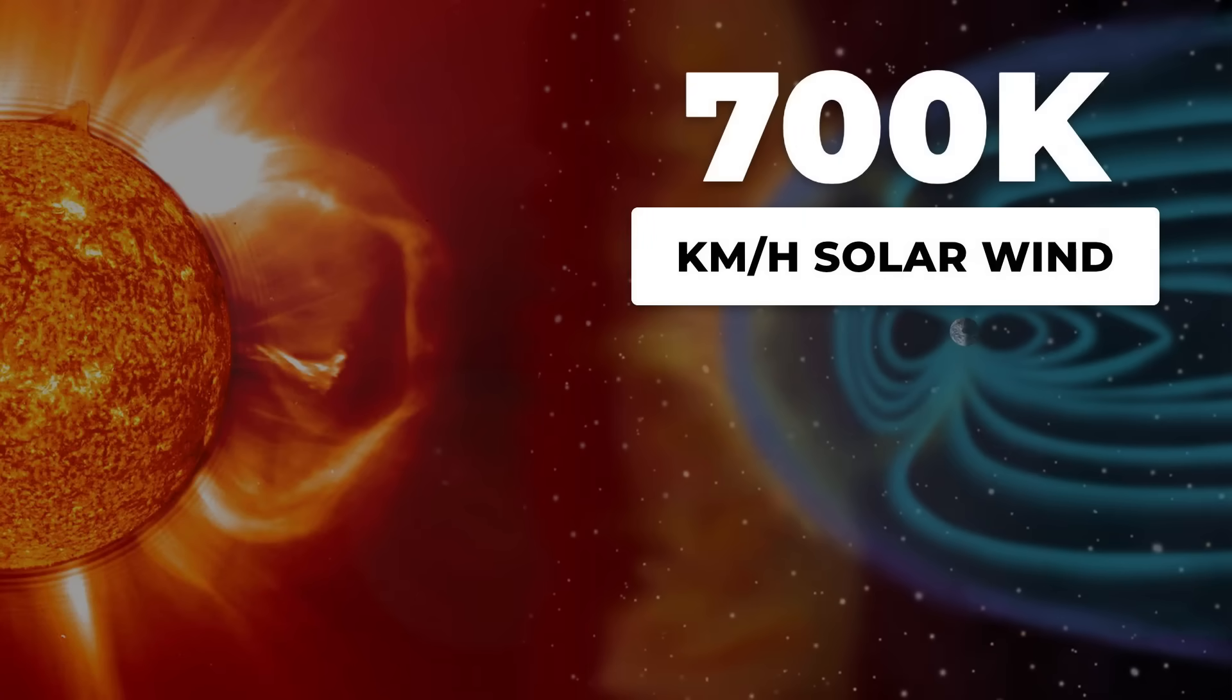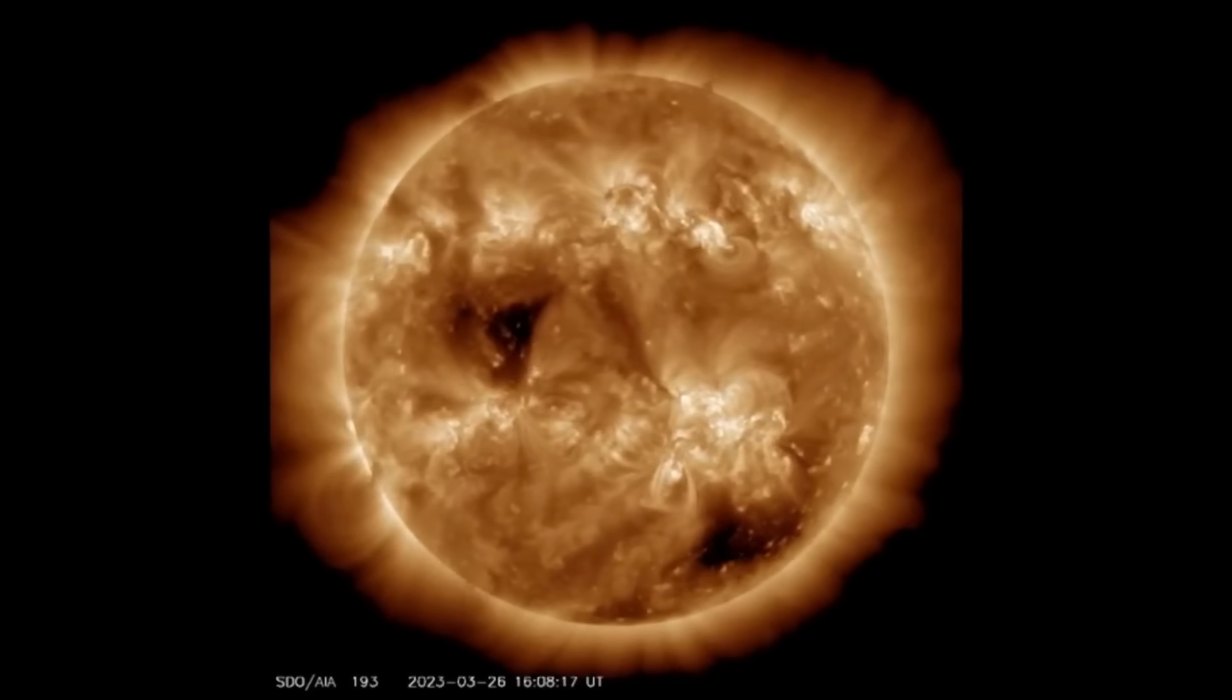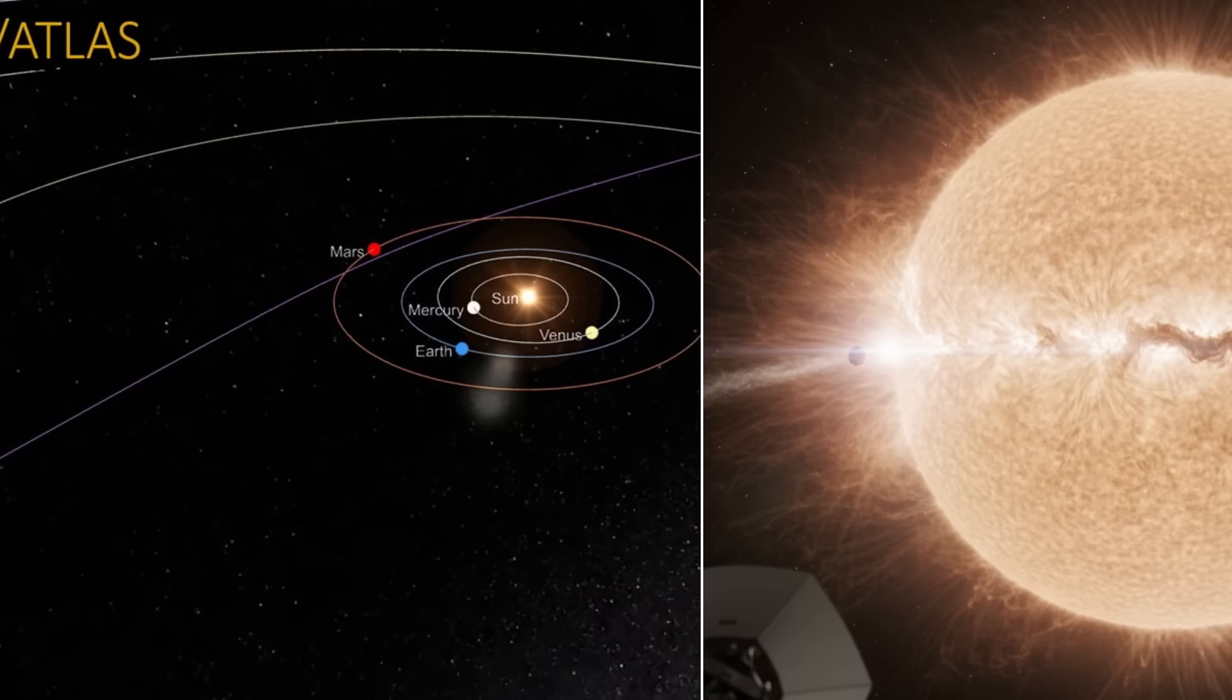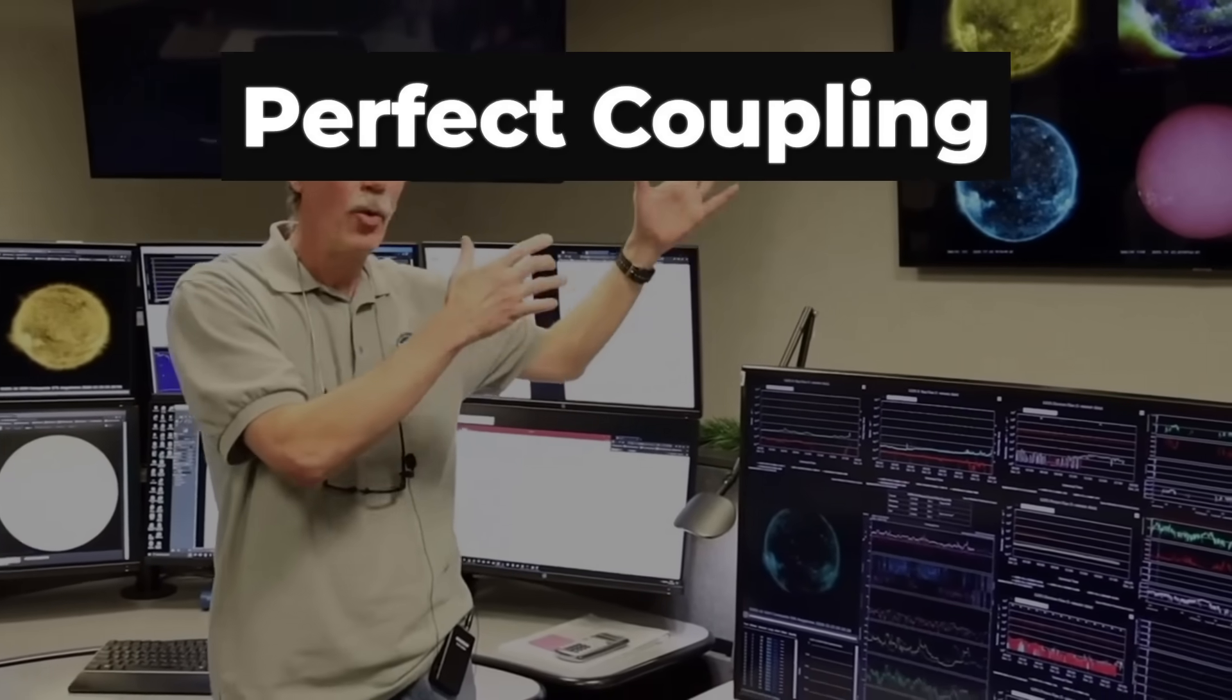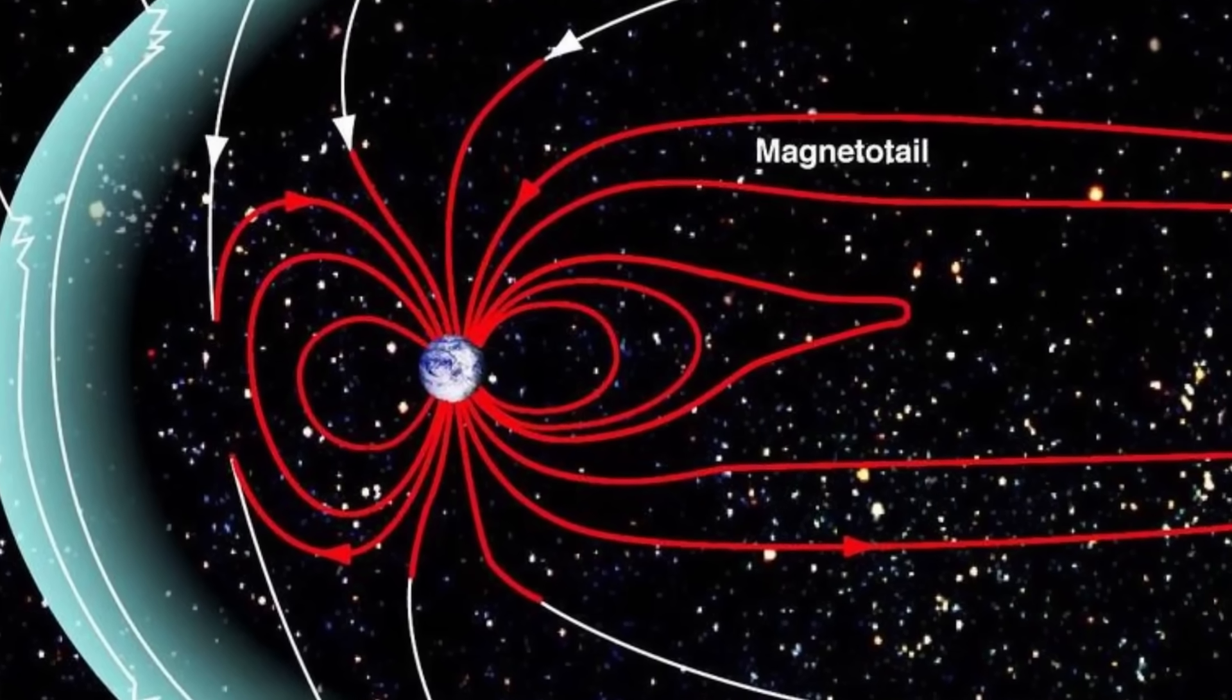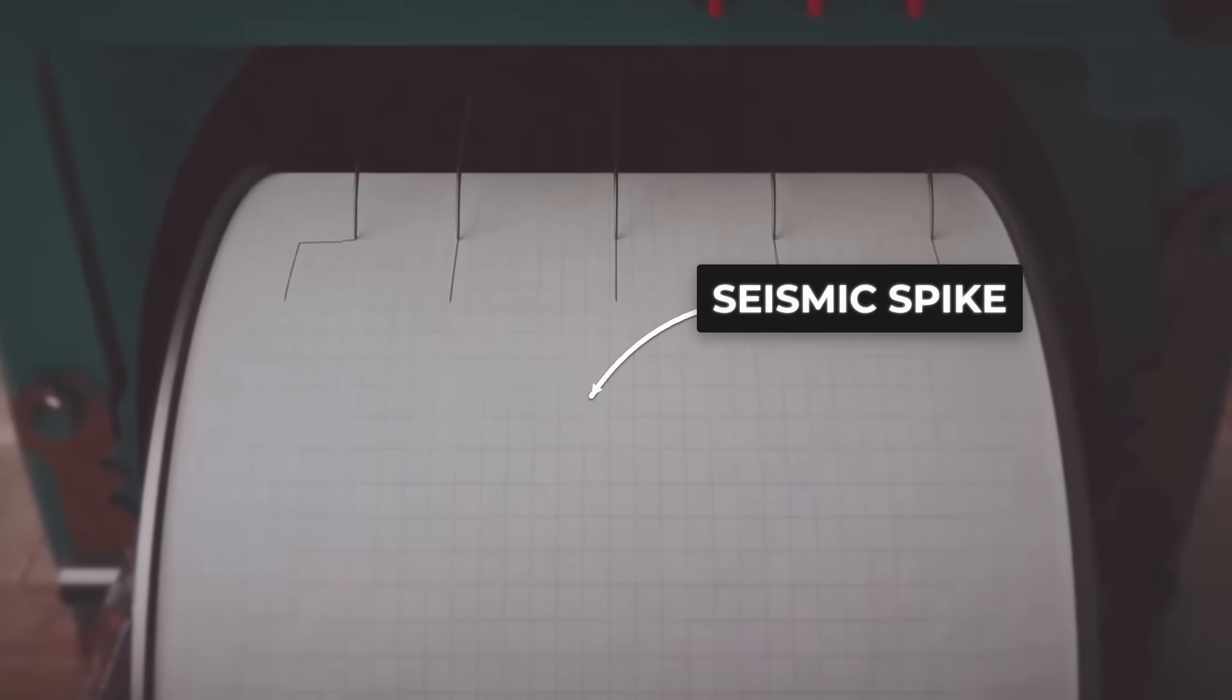Earth is about to be blasted by a 700,000 km per hour stream of charged particles from a rare trans-equatorial coronal hole, right as an interstellar comet, 3I-Atlas, vanishes behind the Sun without warning. Experts call this a perfect coupling event. The magnetic gateway is wide open.